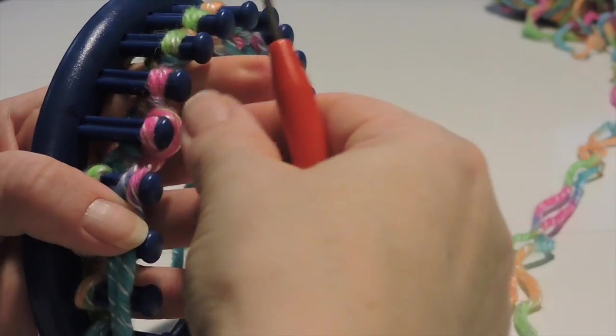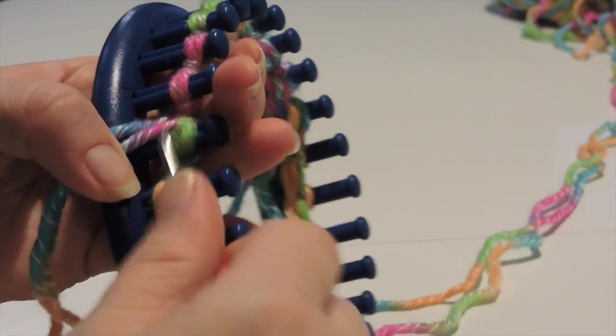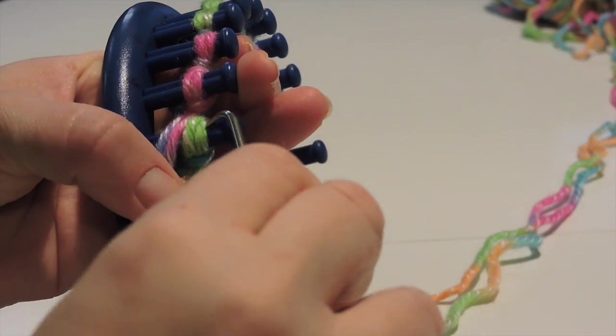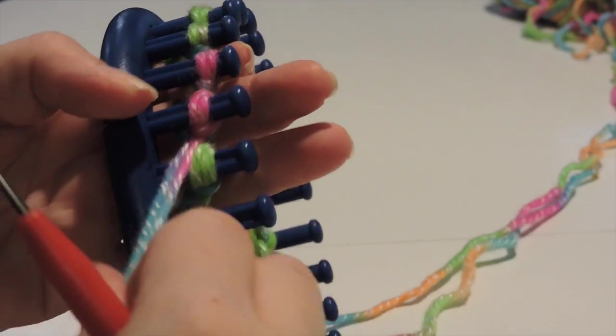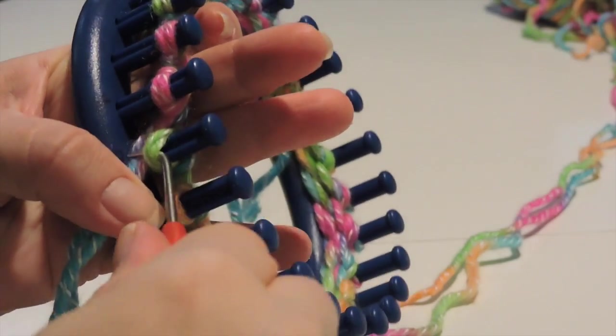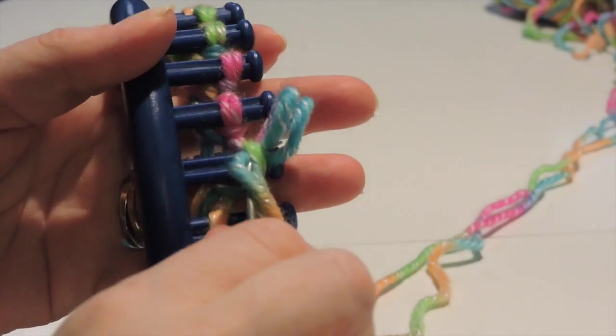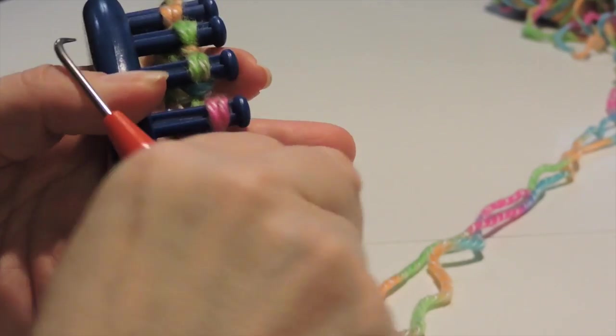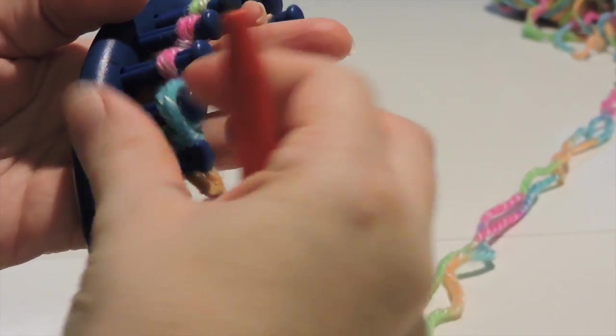So once you do one all the way around, that's considered one row. I suggest using a counter or writing it down to keep track of your stitches. Otherwise, your project won't turn out right. I use a stitch counter. It's easier, and I also write it down when I can't find my stitch counter.